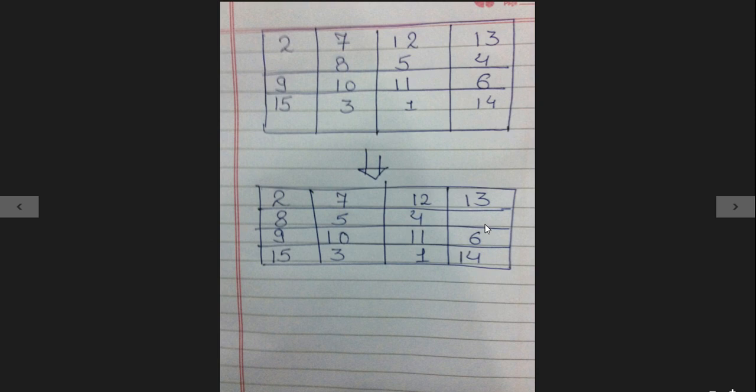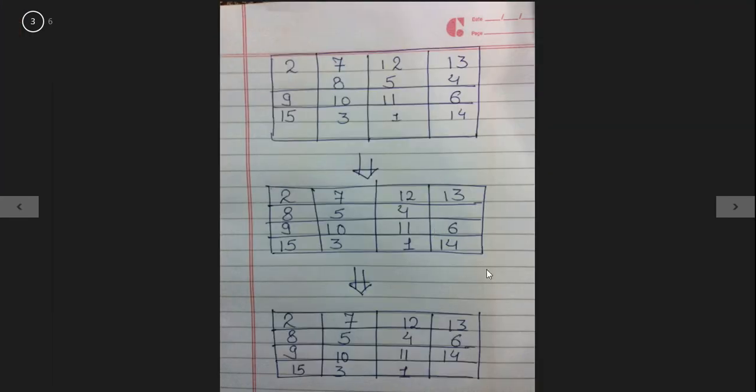Now further, move fourth column elements upwards to cover that empty space and finally we get the last box as empty. You can see here.